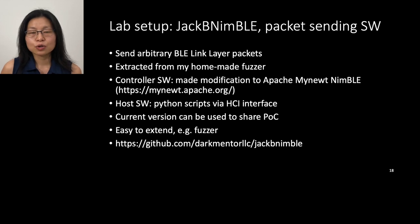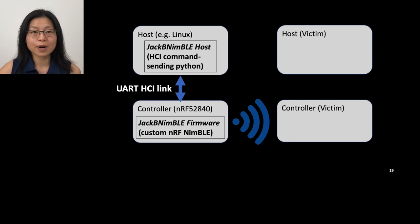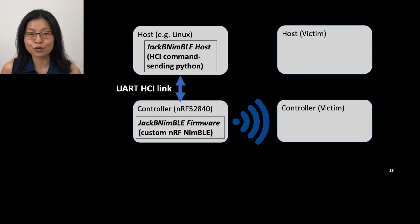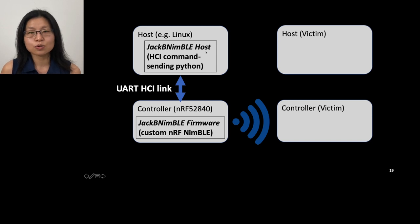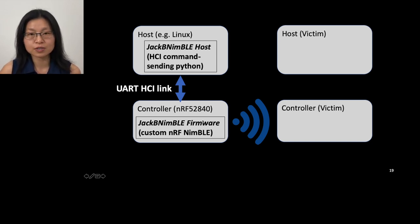With this hardware you need software, and today I'm releasing JackpNimble. Using JackpNimble you can generate arbitrary BLE link layer packets, and it will be easy to extend to make your own fuzzer. JackpNimble comes in two parts. The first is the firmware — I modified Nimble because Nimble does not generate packets that violate the Bluetooth specification, but we do want to generate non-compliant packets. And to control this firmware, I made a host code written in Python, which is responsible for crafting these arbitrary packets and passing them to the firmware, which then sends them.